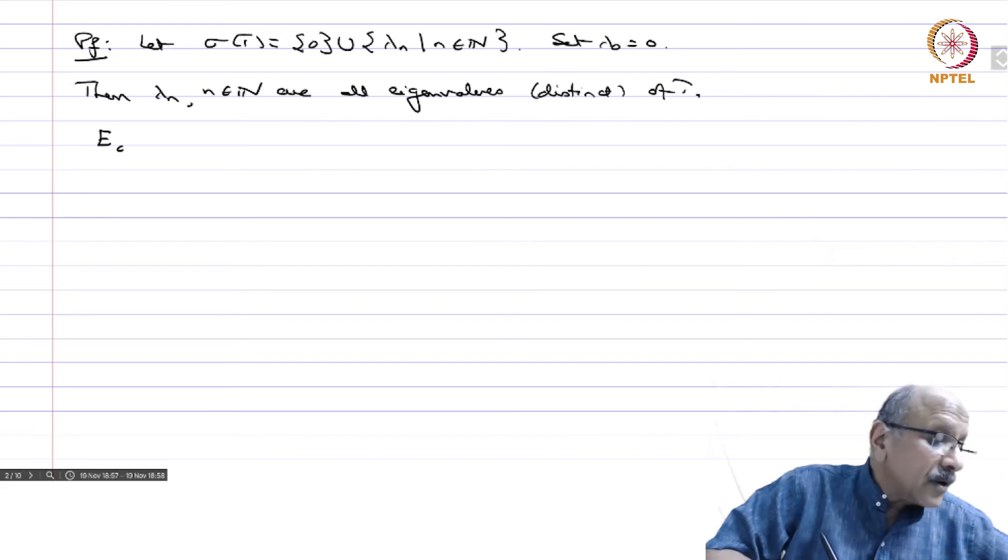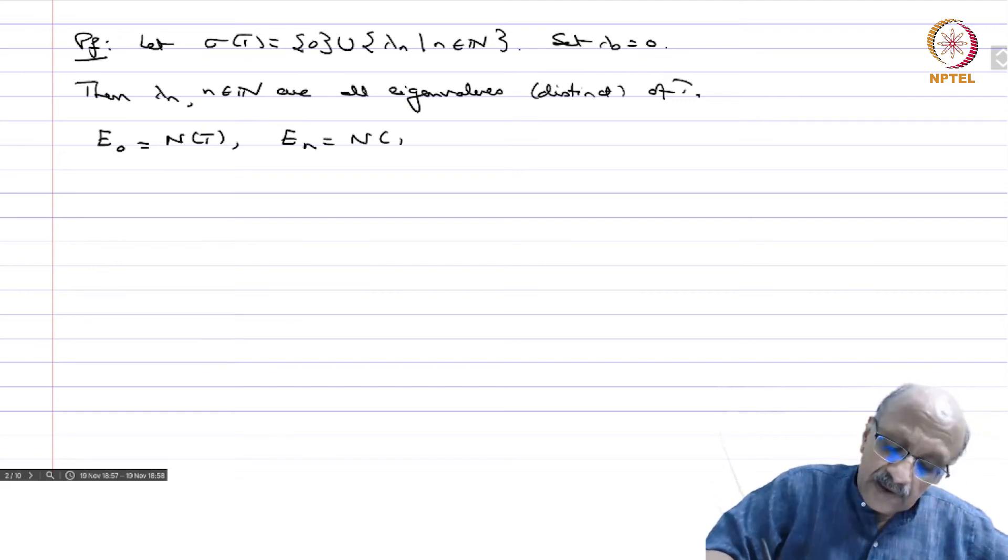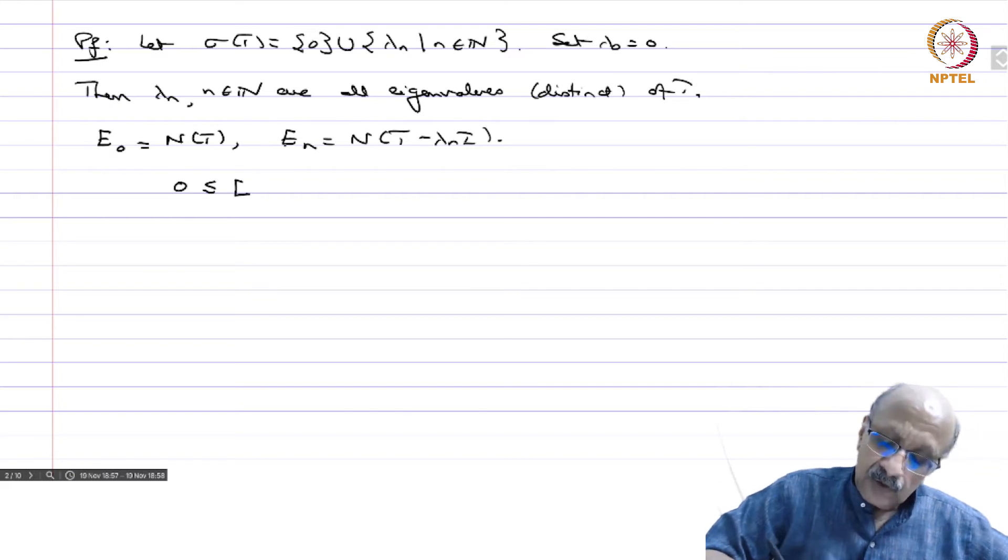We set E_0 equals null space of T and E_n equals null space of T minus lambda_n times I. Then 0 ≤ dimension of E_0 and E_0 could also be infinite dimensional.